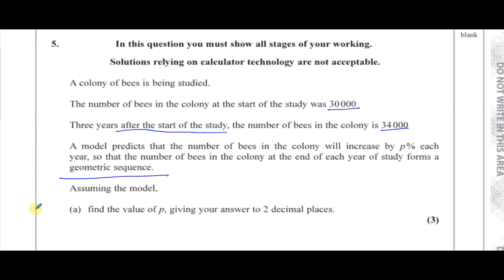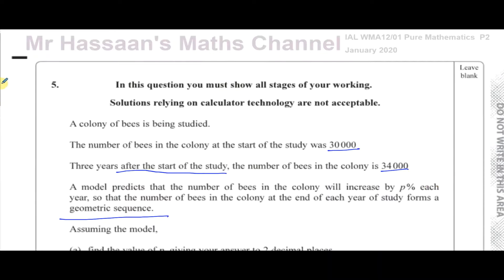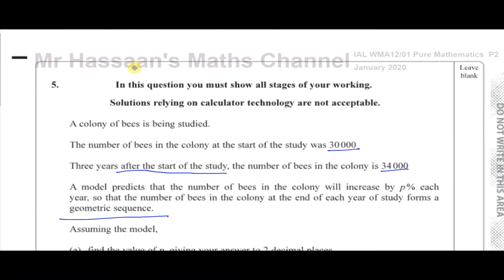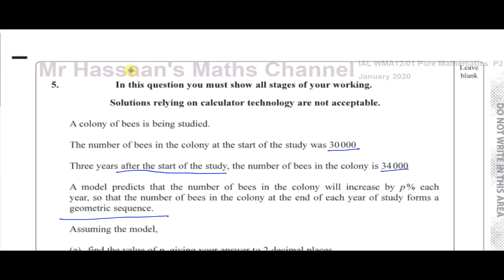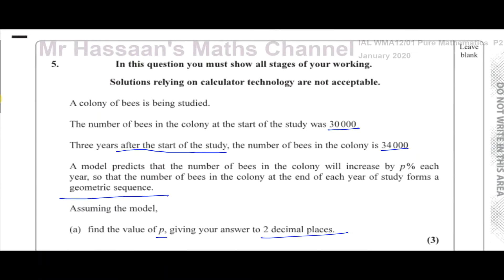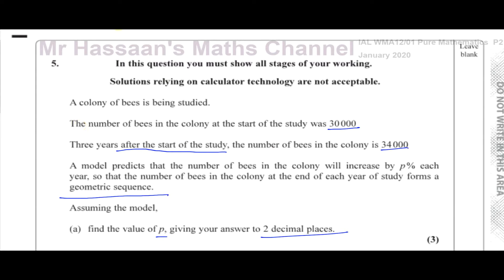Assuming the model, find the value of P, giving answers to two decimal places. There are a few things that are going to cause some issues. The first issue is the fact that we're asked to find the percentage increase, and it's a geometric sequence. We know that to find a particular term in the sequence, u_n equals the first term times the common ratio to the power of n minus 1.